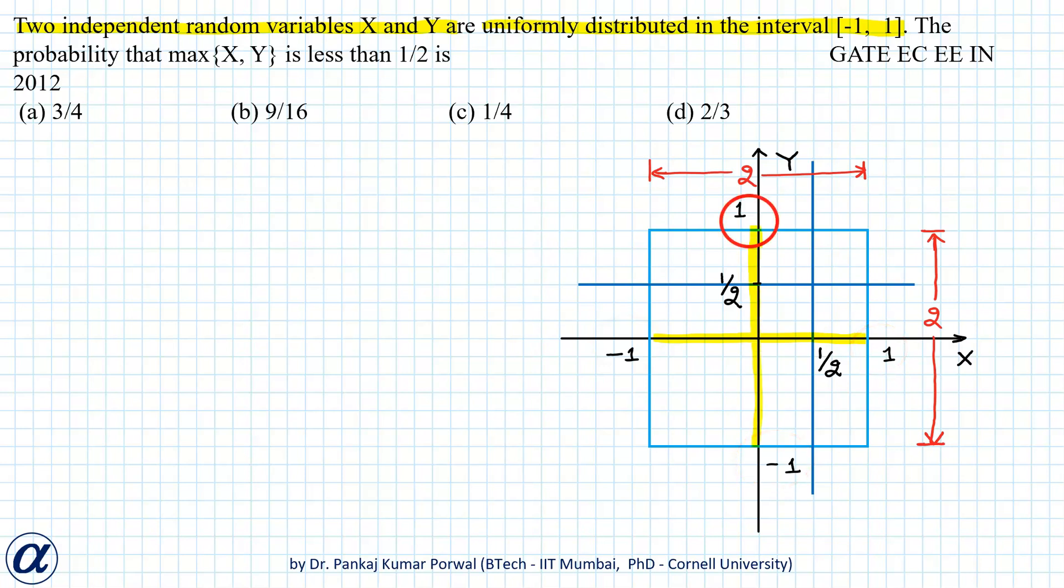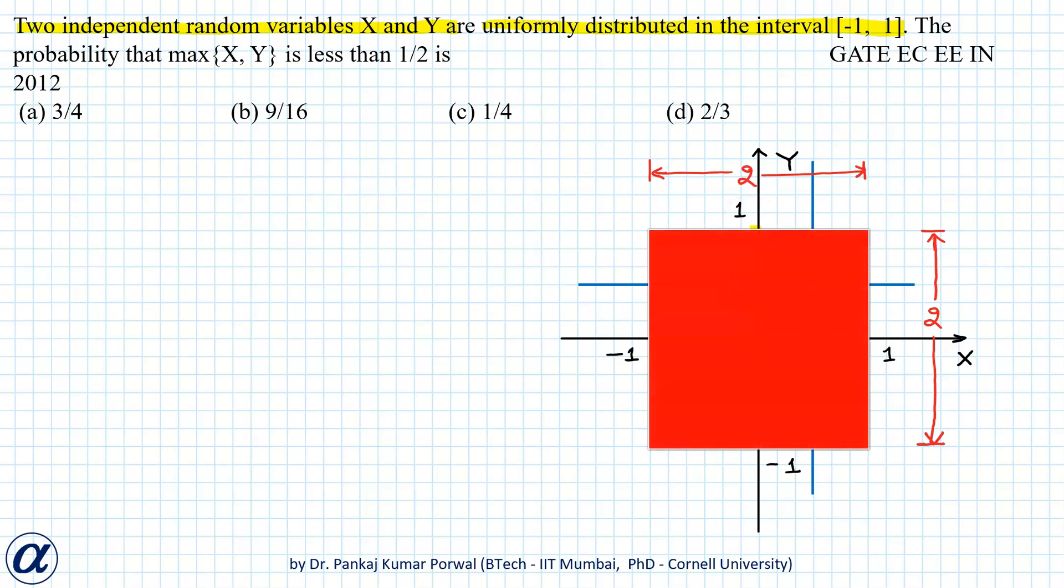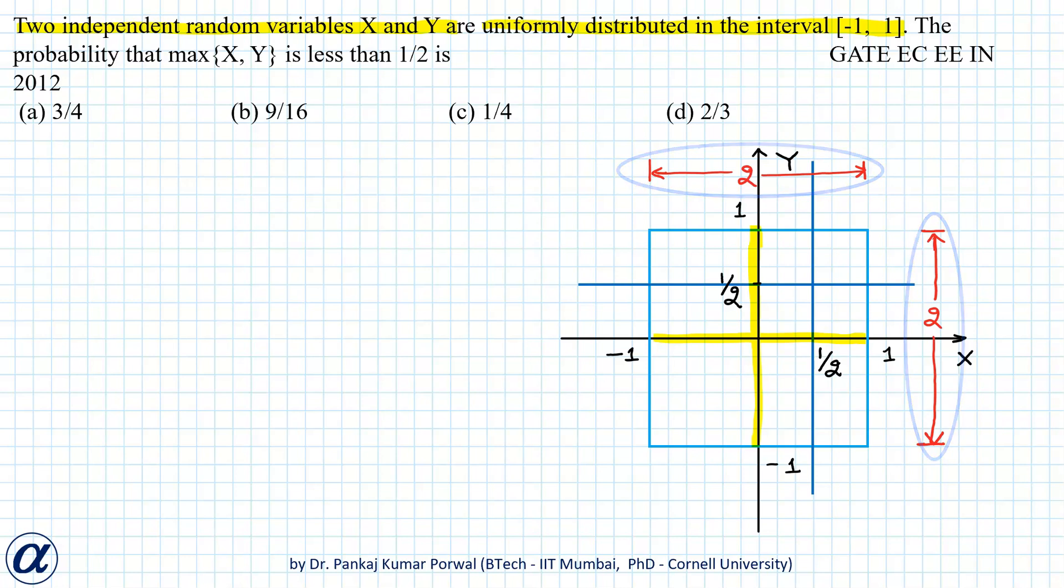So X and Y can lie anywhere in this square of size 2 units by 2 units for different values of X and Y in the interval [-1, 1].